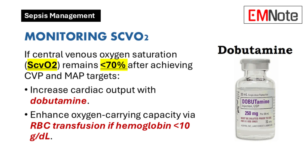Once central venous pressure and mean arterial pressure targets are achieved, if central venous oxygen saturation remains below 70%, further interventions are necessary. This may involve increasing cardiac output through dobutamine administration or enhancing oxygen-carrying capacity via red blood cell transfusion. If hemoglobin levels fall below 10 g per deciliter, transfusion is indicated; otherwise, dobutamine should be used to raise central venous oxygen saturation above 70%.